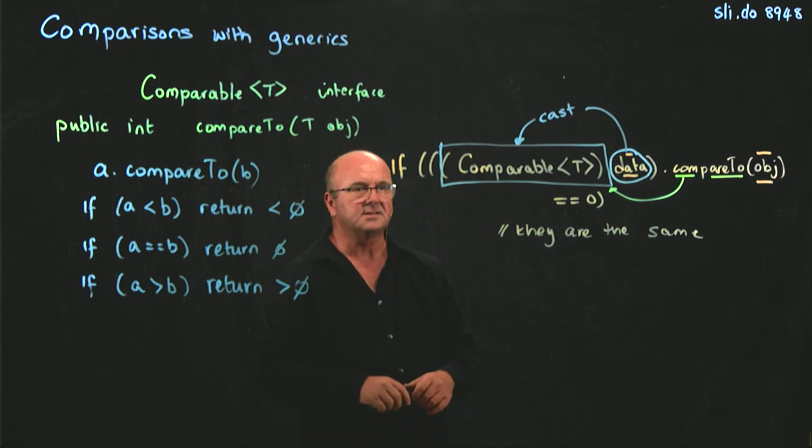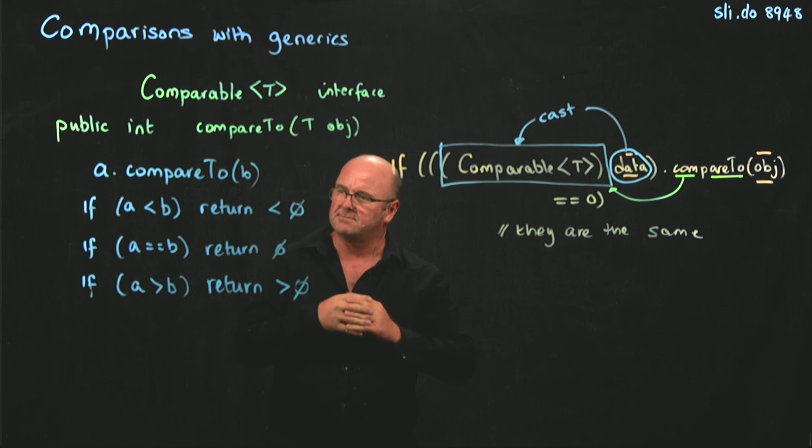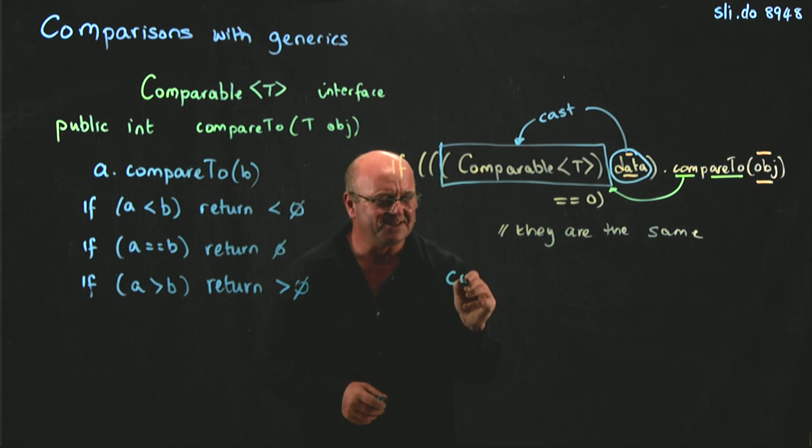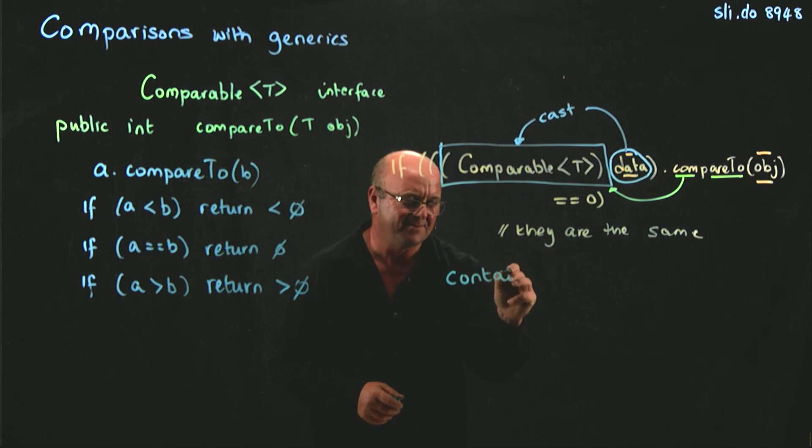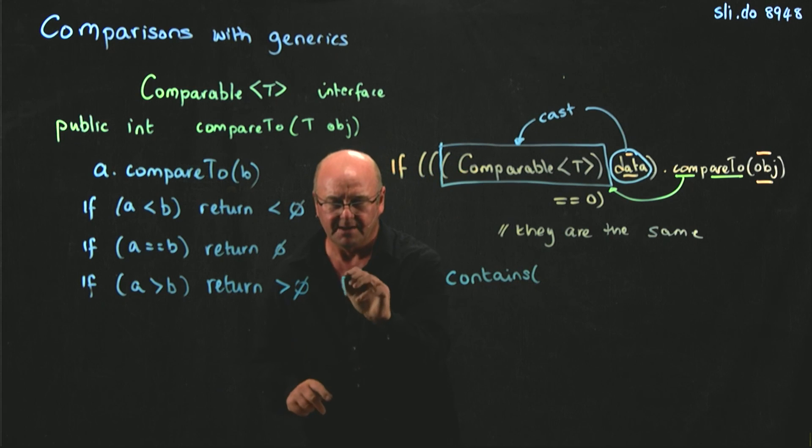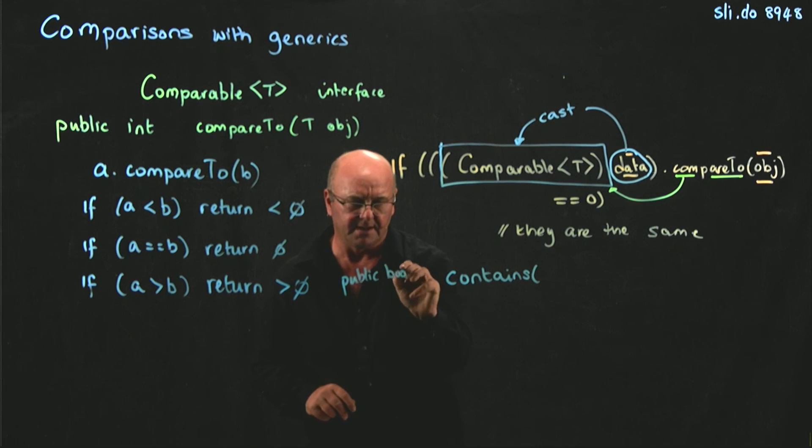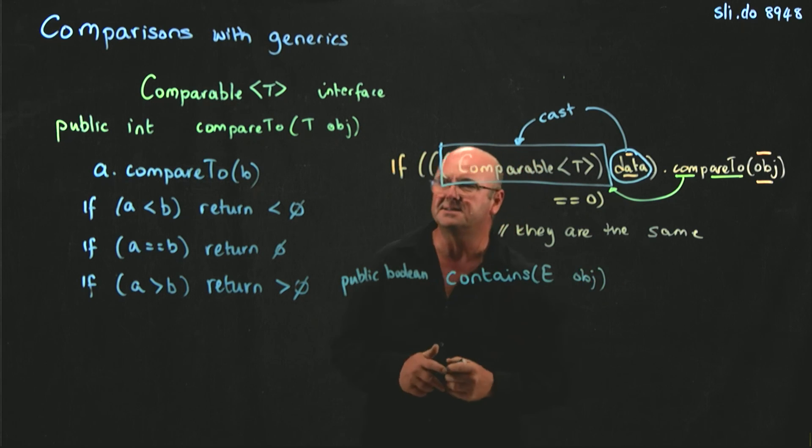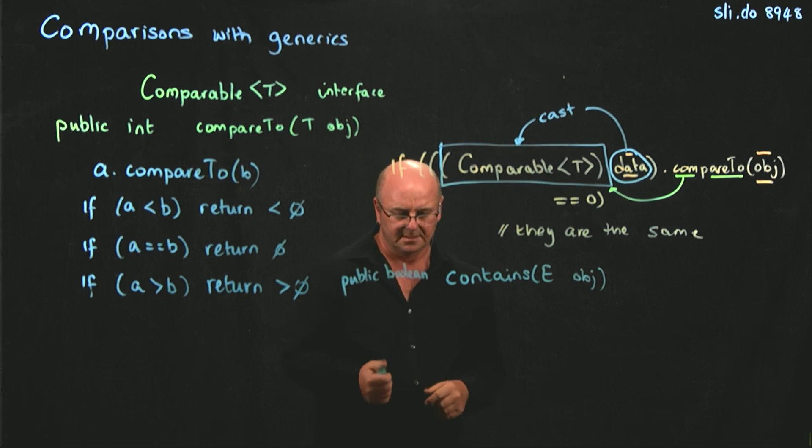So, we're going to use this in the linked list that I talked about. Can you guys remember which linked list method we're probably going to use this in? It was a while ago. So, there's a contains method. And so, the contains method has the signature public boolean contains E object.